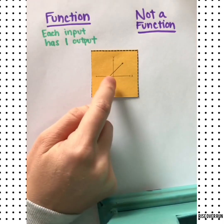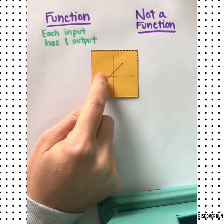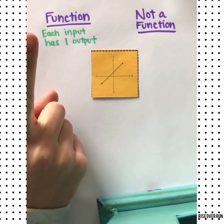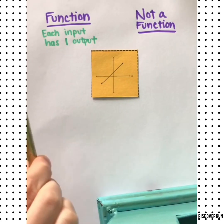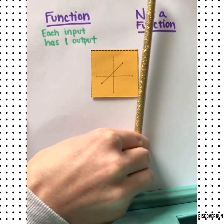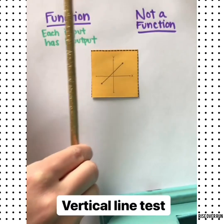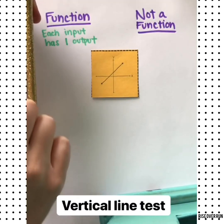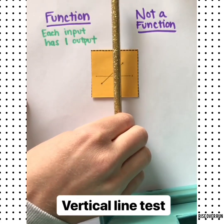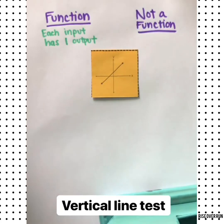When we look at graphs, again we're trying to see if each x value or each input only has one output. You may have heard of the vertical line test. If you take a vertical line and move it across the graph, you can see if two points of the graph hit the vertical line at one time. If they do, then it's not a function. This one passes the vertical line test.